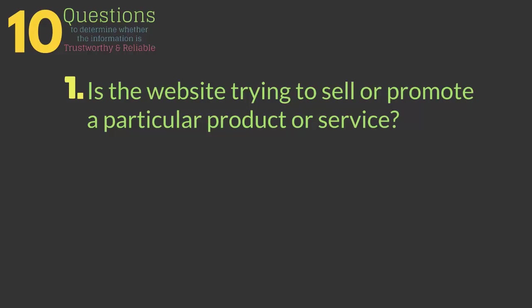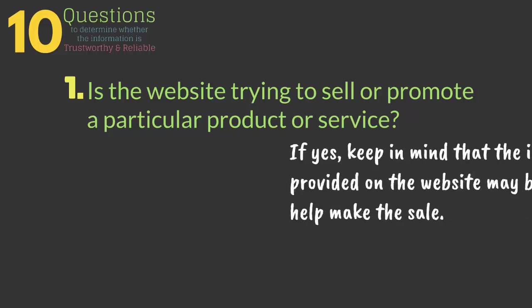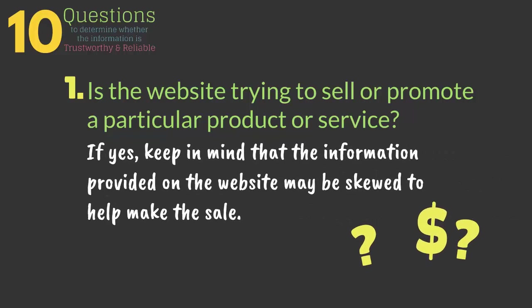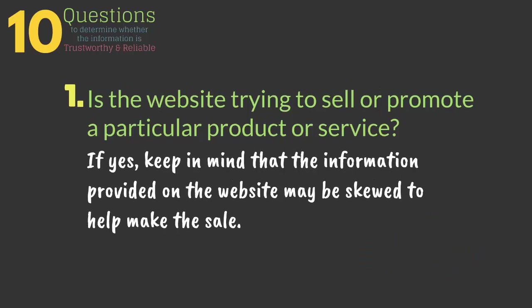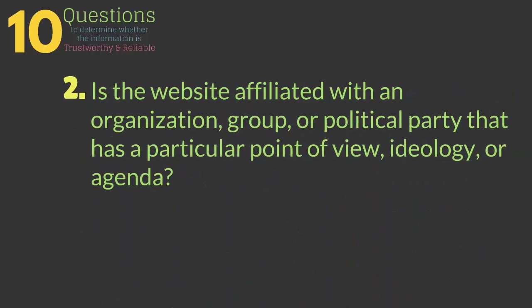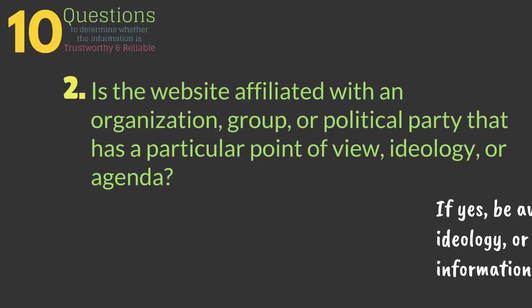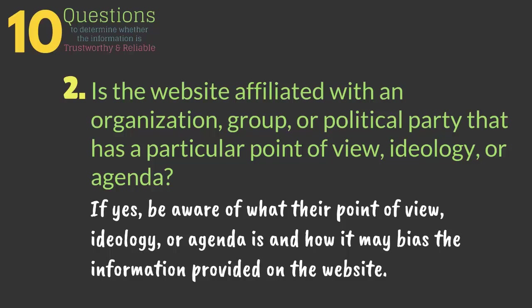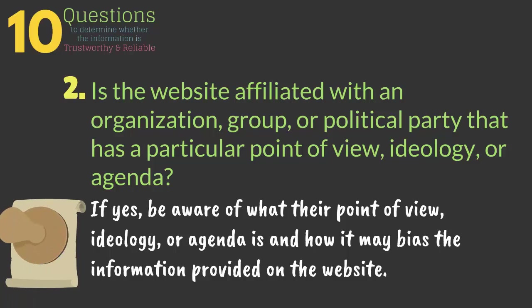Question 1: Is the website trying to sell or promote a particular product or service? If yes, keep in mind that the information provided on the website may be skewed to help make the sale. Question 2: Is the website affiliated with an organization, group, or political party that has a particular point of view, ideology, or agenda? If yes, be aware of what their point of view, ideology, or agenda is and how it may bias the information provided on the website.